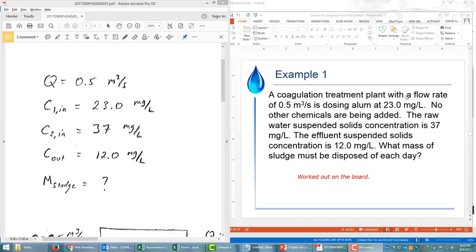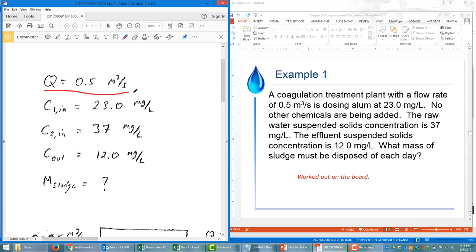In this example, we're dealing with a coagulation treatment plant, or a conventional drinking water treatment plant with coagulation, flocculation, and sedimentation, with a flow rate of 0.5 meters cubed per second. We're going to define that over here as our Q, 0.5 meters cubed per second.